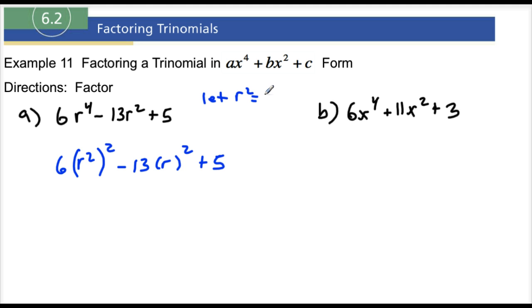Maybe like we'll just say u again, like we did last example. So if we let r squared equal u, well, that means then that this now would become 6u squared, right? Minus 13, really this is supposed to be r squared, so minus 13u.